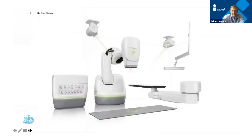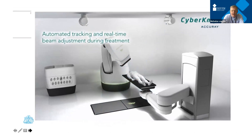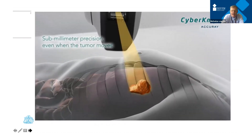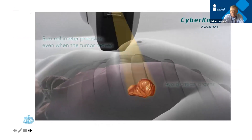This is an example of a CyberKnife, which we use at the Christie. It differs from a standard radiotherapy machine in that the linear accelerator is mounted on a robot and can move in all different planes, delivering very fine beams of radiotherapy extremely accurately. It has the ability to track a target as it moves, using x-ray machines on the roof and a sensor on the floor to take real-time images.